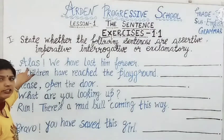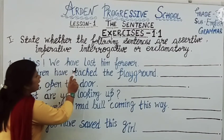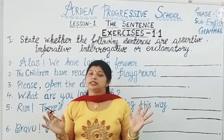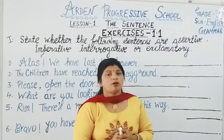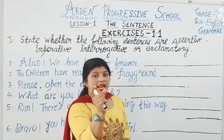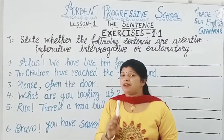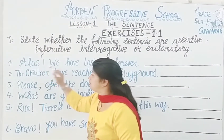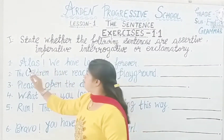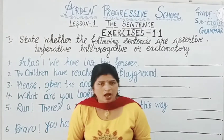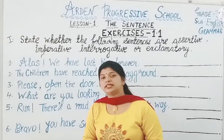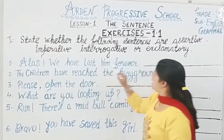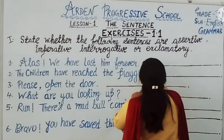First one is: Alas, we have lost him forever. This sentence expresses sadness. I told you that the word 'alas' is used for grief, and you can also see the exclamation mark at the end. By seeing this word and this exclamation mark, you can recognize this is an exclamatory sentence.